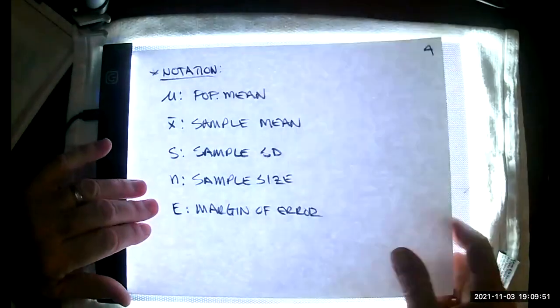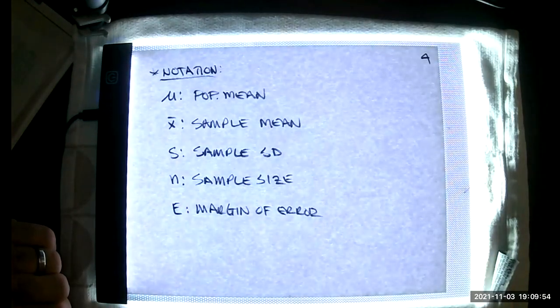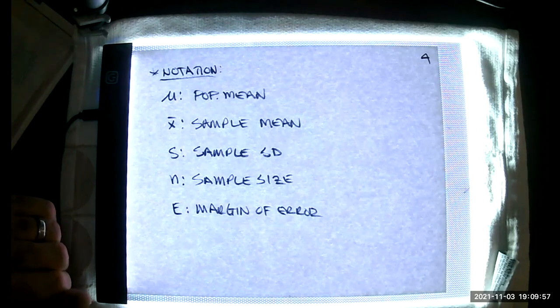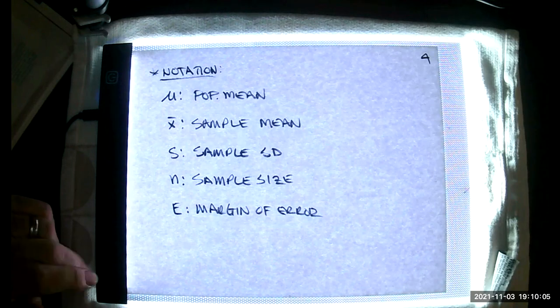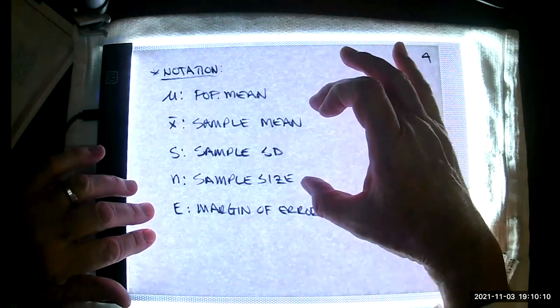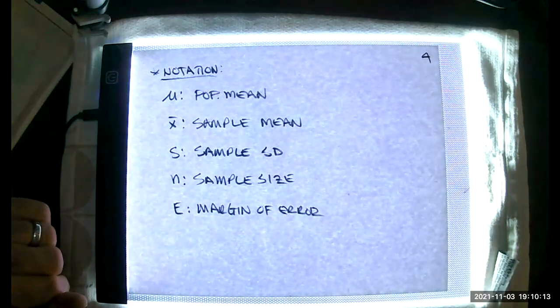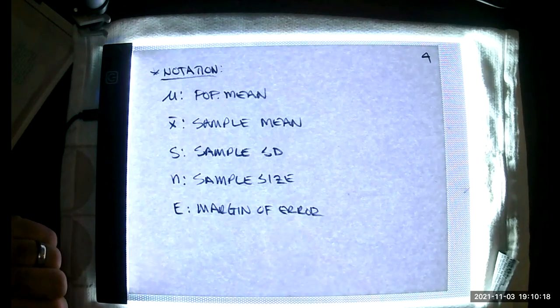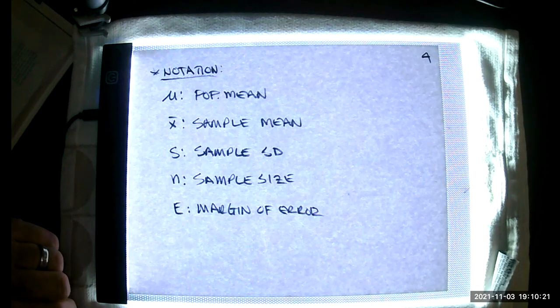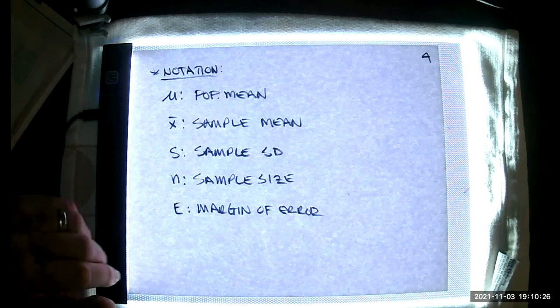Let me give you a little bit of notation. Mu is our population mean, that's what we're going to try to estimate. X bar is our sample mean, that's what we'll pick up from our sample. S is the sample standard deviation and n is the sample size. These two things come directly from our sample. It's what we have control over. And then we have a margin of error, and that's going to depend on sample data and a level of confidence.